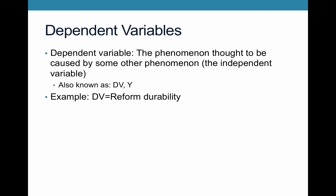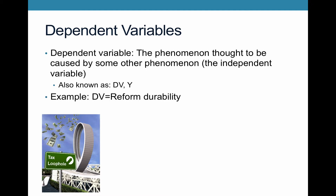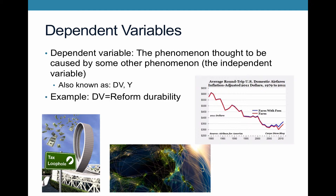With the Potashnik example, the dependent variable is reform durability. The tax reform was a big accomplishment when it got on the books, but then bit by bit over time it was eroded away as more and more loopholes were added back into the system. So this is a reform that wasn't very durable. In comparison, the airline deregulation reform was durable — once you deregulated the industry, it stayed deregulated.